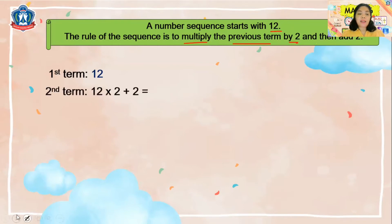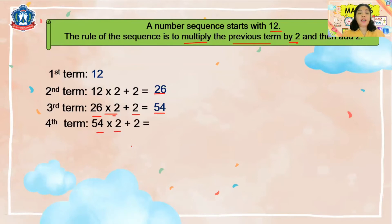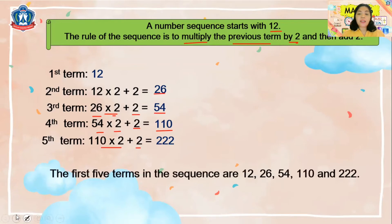The second term is 12×2 + 2 = 26. For the third term, 26×2 + 2 = 54. For the fourth term, 54×2 + 2 = 110. For the fifth term, 110×2 + 2 = 222. So the first five terms are 12, 26, 54, 110, and 222.